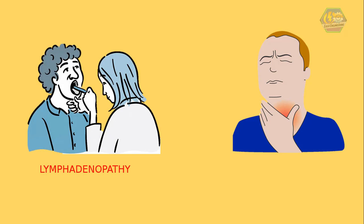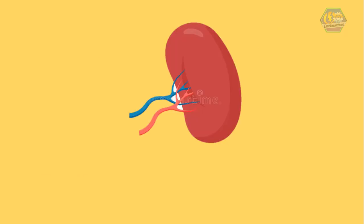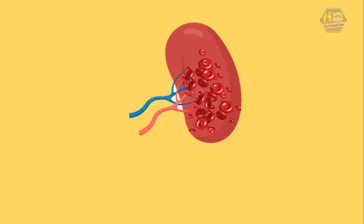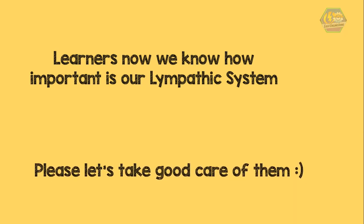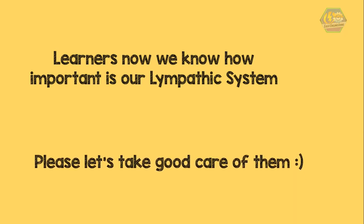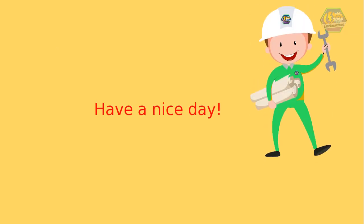The body also uses the spleen as a place to store blood and iron for future use. So learners, now we've learned something about how important our lymphatic system and our spleen are. Don't take them for granted, especially if you have a weak body. That is all for now — I hope you learned something today. Have a nice day!